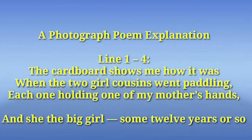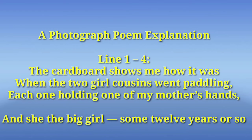Now let's discuss the poem line by line. 'The cardboard shows me how it was when the two girl cousins went paddling, each one holding one of my mother's hands, and she the big girl, some 12 years or so.' The poet is looking at an old photo album made of cardboard. In the picture, three girls are walking on the beach holding each other's hands. The girl in the middle is the tallest and oldest — that is the poet's mother, around 12 years old when the picture was taken.